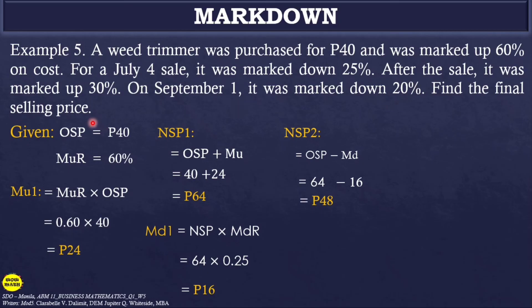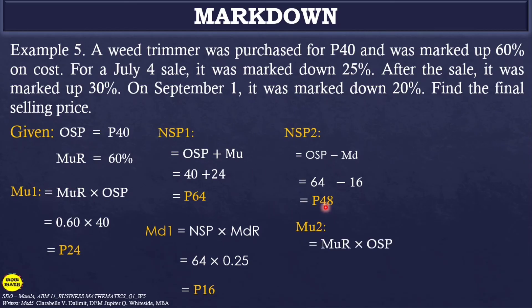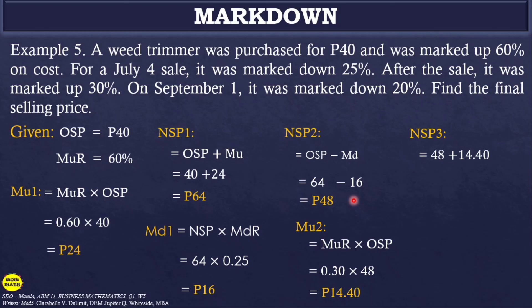After the sale, the price was marked up 30% from 48 pesos. Markup 2 = 48 × 0.30 = 14.40 pesos. New selling price after markup: 48 + 14.40 = 62.40 pesos. So the price after the sale, following the 30% markup, is 62.40 pesos.